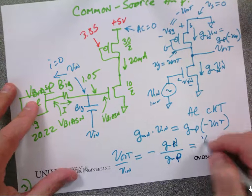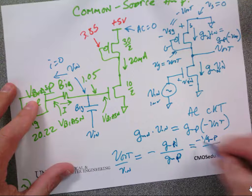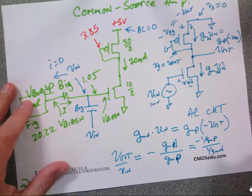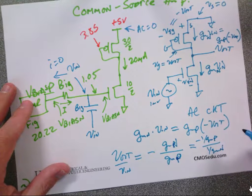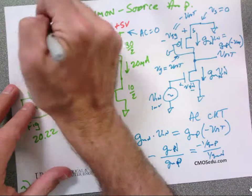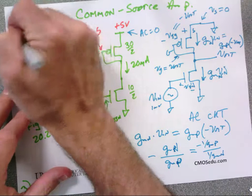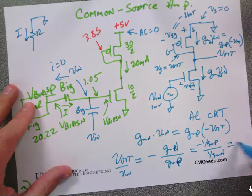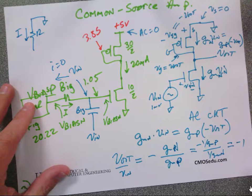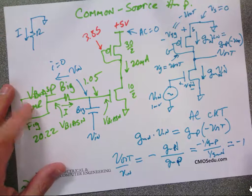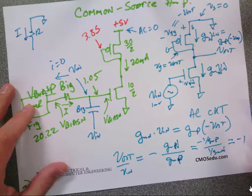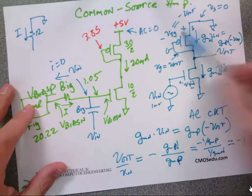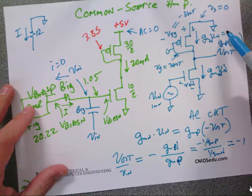Equivalently, the gain is −(1/gm_P)/(1/gm_N). Since both devices are the same size, gm_N ≈ gm_P and the gain is approximately −1. You might ask: what's the point of unity gain? This topology is used as a current mirror input; the mirrored current then drives a high-impedance load to obtain high gain.